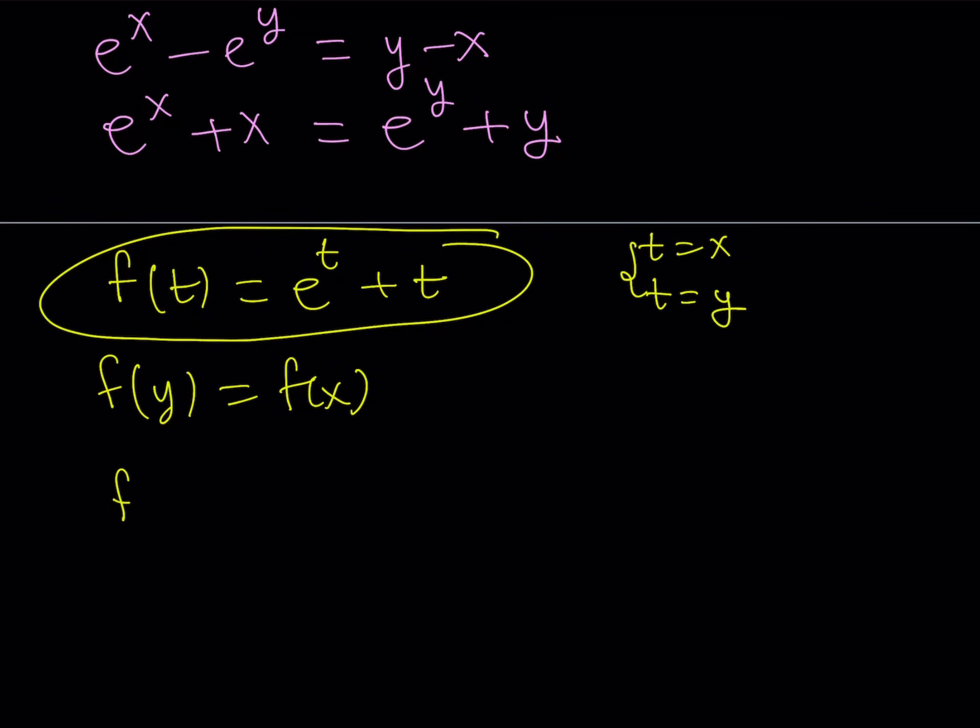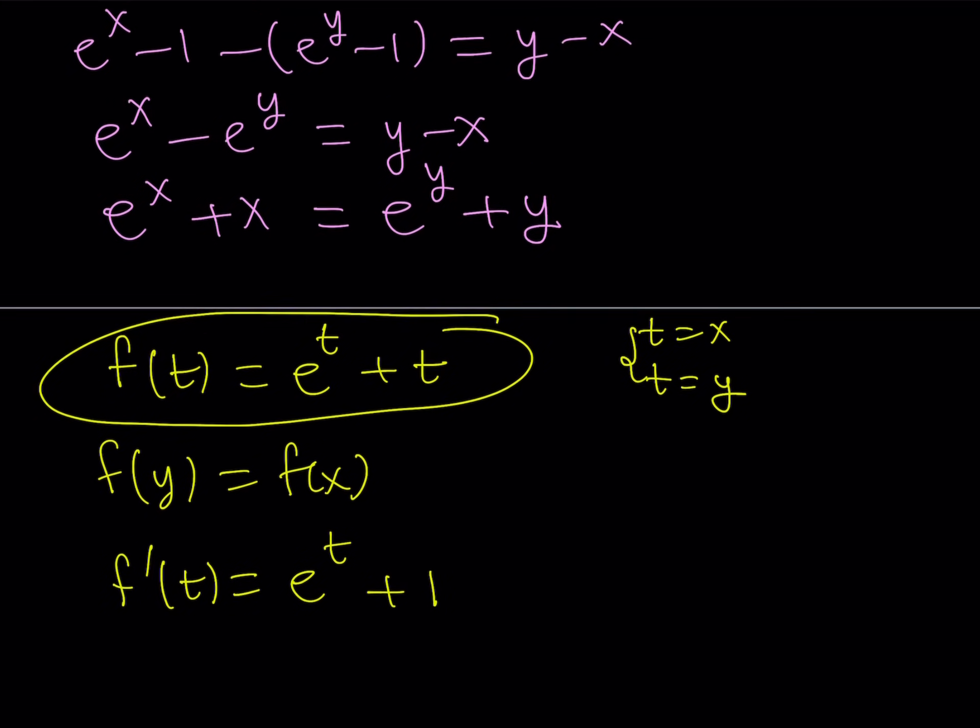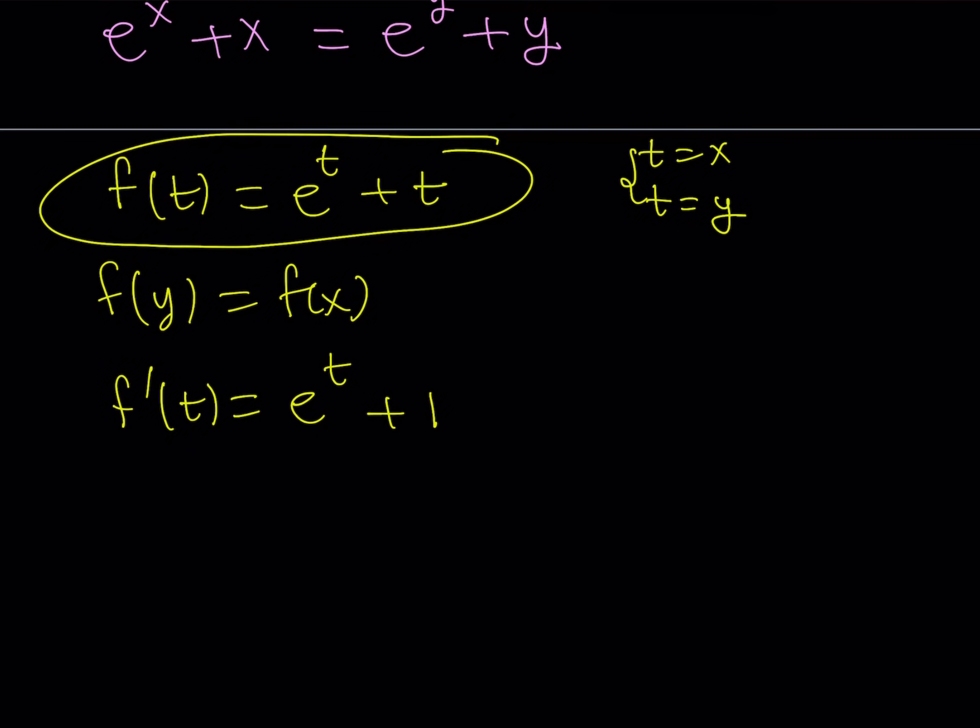So I'm going to differentiate this function. And when I differentiate it, it's going to be e to the power t plus one because the derivative of e to the power t is itself. And the derivative of t with respect to t is one. Now this shows always a positive value because e to the power t is always positive for all values of t. So our function has a positive derivative.